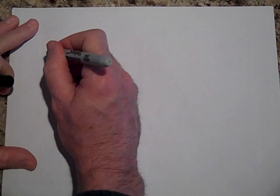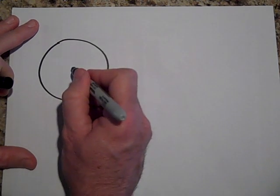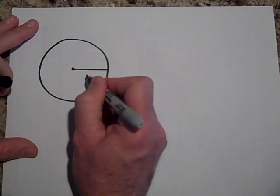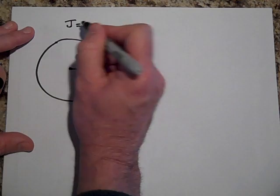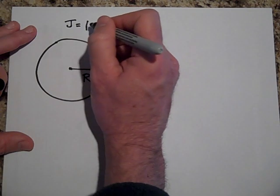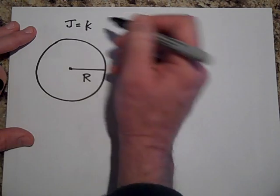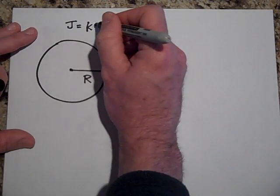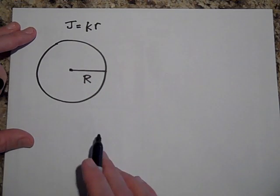Okay, for this next problem, we're going to now assume that the current is not uniformly distributed throughout. Now we have a wire like such, maybe capital R, and let's say that the current density J is equal to some constant, how about K, just some constant K times R. So the further out you go, the more the current density is.